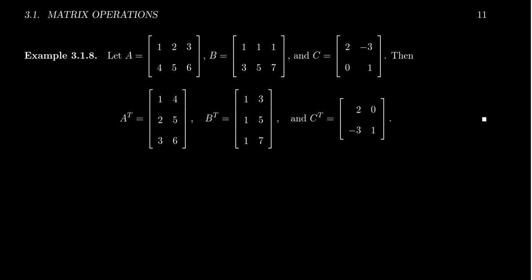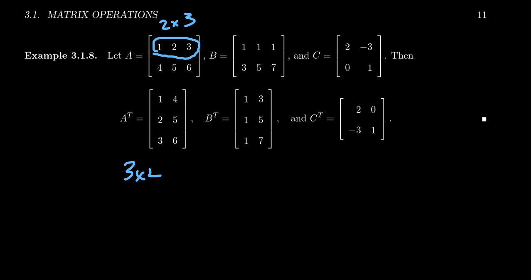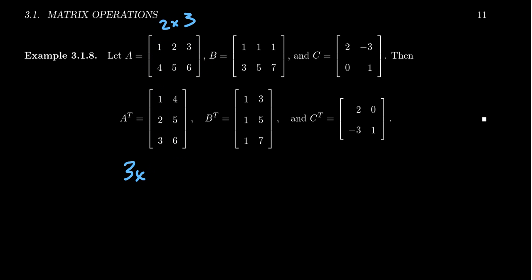As an example, take the matrix A right here. A is a 2 by 3 matrix, and its transpose is going to be a 3 by 2 matrix. The first row of A becomes the first column of A transpose, and then the second row of A becomes the second column of A transpose. So rows become columns and columns become rows, like so.